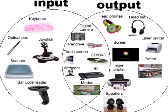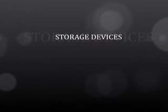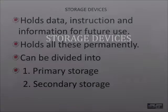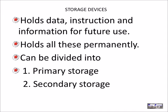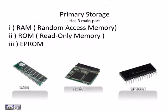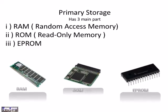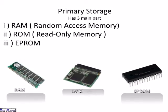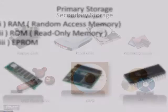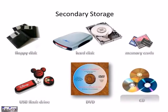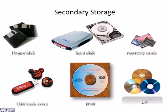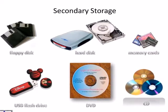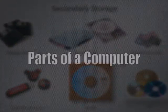Some devices perform both input and output, such as a fax machine. However, without proper storage devices, the computer cannot hold data and instructions to execute all of these functions. Storage devices are divided into two main categories: primary storage, which consists of Random Access Memory, Read-Only Memory, and EPROM; and secondary storage, which consists of hard disks, memory cards, CDs, DVDs, and USB flash drives.